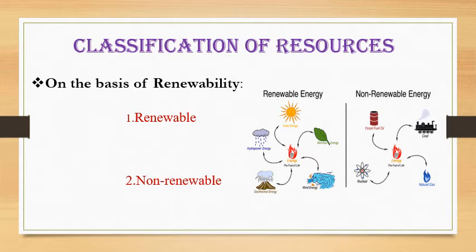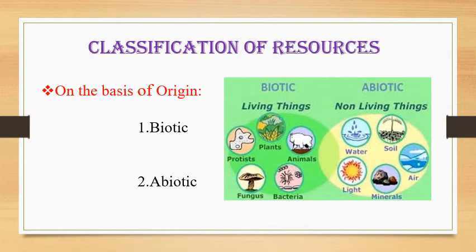On the basis of origin, resources are classified into two types: biotic resources and abiotic resources. First, biotic resources. Resources which are obtained from the biosphere and have life are known as biotic resources. All living resources are known as biotic resources. For example, birds, animals, fish, and forests. Biotic resources provide a variety of useful products to us and have the capacity to reproduce and regenerate. Generally, all biotic resources are renewable sources.